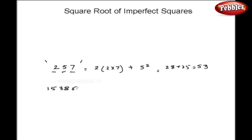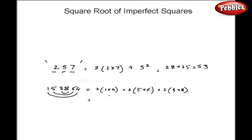If you have a larger number, the method is absolutely the same. You take the two corner numbers and double them, then go on adding doubles of the end numbers. So in this case my first pair is 2×1×4, plus 2×5×6, plus 2×3×8. If there is one digit more as a central digit, you add the square of that middle digit to find the Dvandva. In this case I got 116 as the Dvandva of 153864.